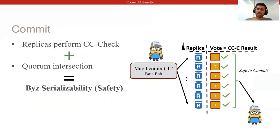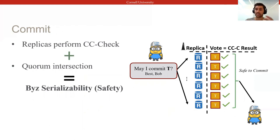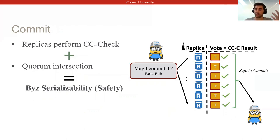This concurrency control check verifies whether the snapshot experienced during execution conflicts with a set of previously committed or tentatively accepted transactions. Different replicas may perform these checks in different orders and hence come to different decisions if there's contention or asynchrony.